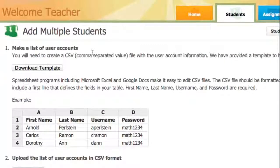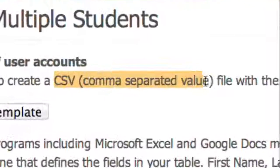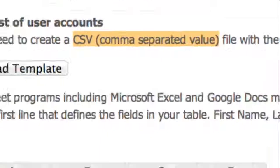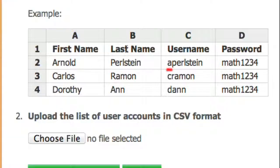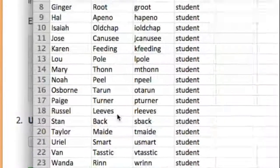Your spreadsheet needs to be saved as a CSV file and organized as shown here with the column headers first name, last name, username, and password in lowercase. Here is what your spreadsheet should look like.